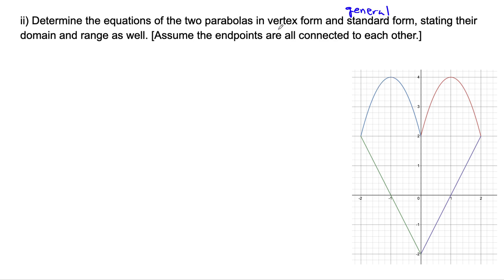In any case, vertex form. Just remember, an equation can be written like y = a(x - h)² + k. That's vertex form in general. There is the vertex, and that point is (-1, 4). This point over here is (1, 4).